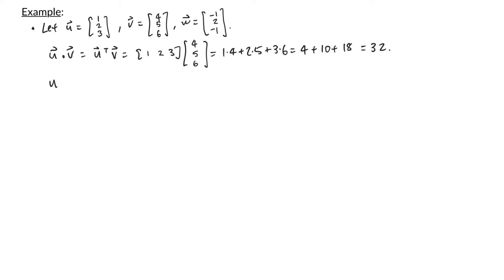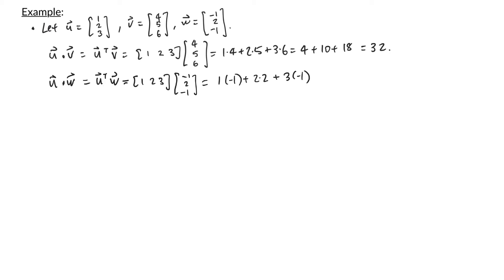Next, let's do the dot product of u with w. That's u transpose times w, giving 1×(−1) + 2×2 + 3×(−1) = −1 + 4 − 3 = 0. Lastly, let's do v dot w. Multiplying corresponding entries and adding: 4×(−1) + 5×2 + 6×(−1) = −4 + 10 − 6 = 0.